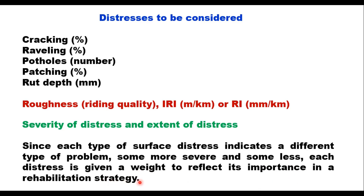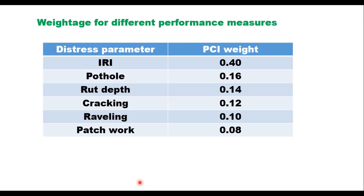The weights given to all distress parameters in IRC 82:2023 are as follows: IRI has a weight of 0.4, potholes 0.16, rut depth 0.14, cracking 0.12, raveling 0.10, and patchwork 0.08. The total sum of all weights is 1.